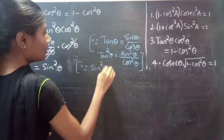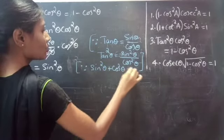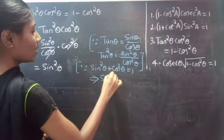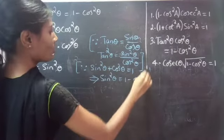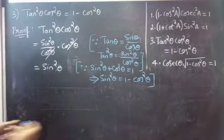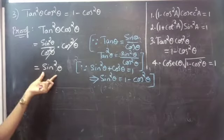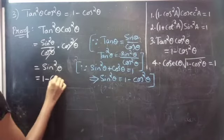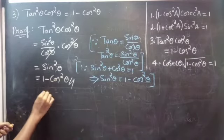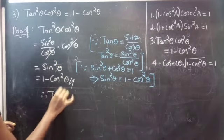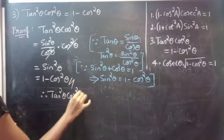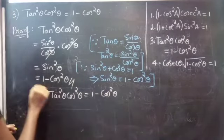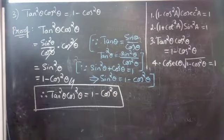Since sin²θ + cos²θ = 1, taking cos²θ to the right-hand side gives sin²θ = 1 - cos²θ. Now replace sin²θ with 1 - cos²θ. So this equals 1 - cos²θ. Therefore, tan²θ · cos²θ = 1 - cos²θ.